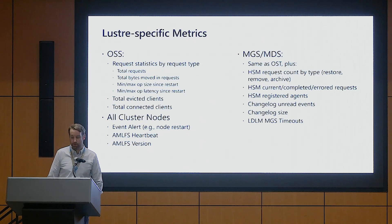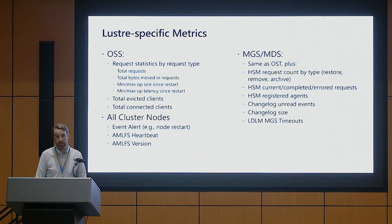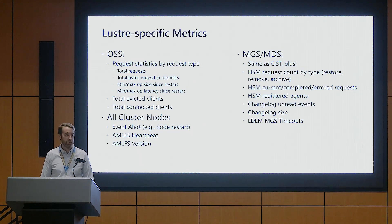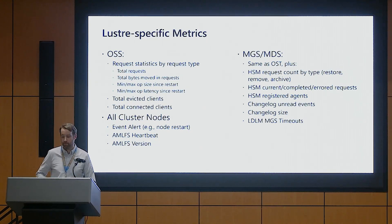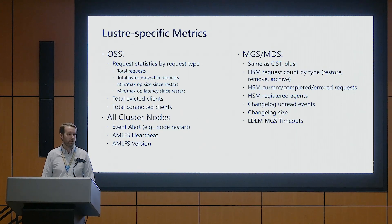There are a bunch of Lustre-specific stats we track as well — OSS, MGS, MDS. Some of the obvious ones: total requests by type, latencies around these, how many clients have been evicted over a period of time, how many clients are currently connected to a given cluster. And then some less common ones, like HSM requests, how many errors we're seeing over time, number of registered agents — all super important to making sure our connectivity between blob and Lustre remains active and healthy. And finally, a few more nuanced ones we've added over time, like distributed locking timeouts seen over a specific amount of time, and changelog sizes.